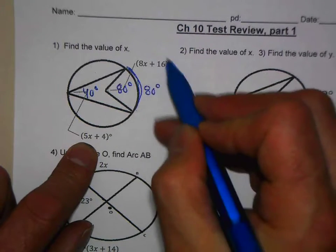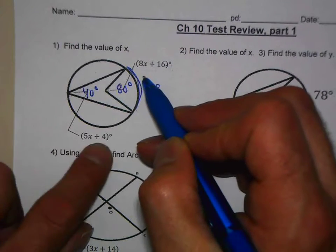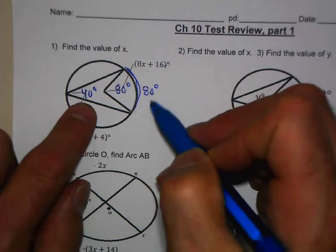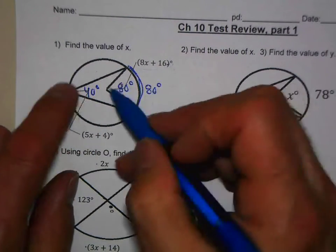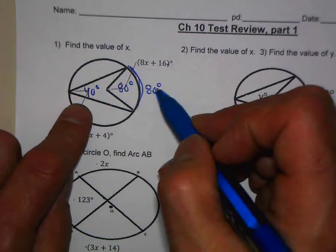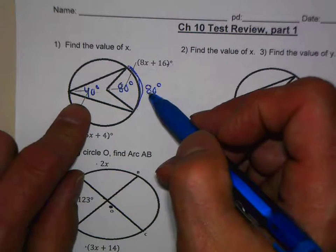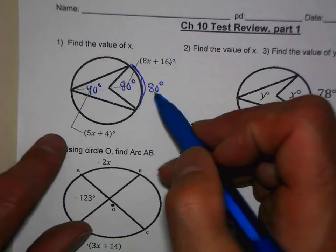...what we could do is say half of 8x plus 16 equals 5x plus 4, because we're saying basically half of 80 equals 40. I'm just throwing down numbers to help us remember the relationship between these three different parts of a circle. So I'm not saying that this angle actually is 80 degrees, I'm just using it to remind you of the relationship between them.